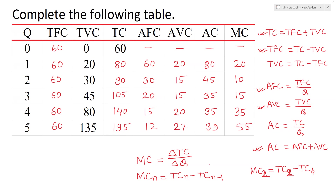This means the table is complete with total variable cost, total fixed cost, average fixed cost, average variable cost, average cost, and marginal cost all filled in using the relevant formulas. Thank you very much for watching.